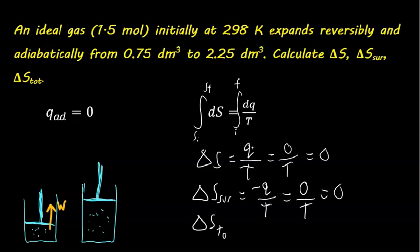And similarly, the change in entropy total equals the change in entropy of the surroundings plus the change in entropy of the system. That's just zero as well. So there's no change in entropy during this process.